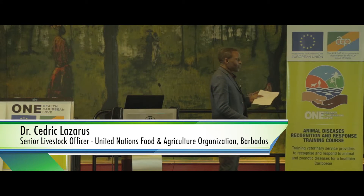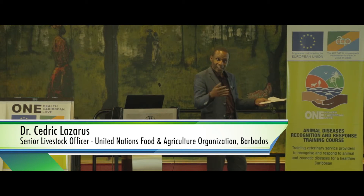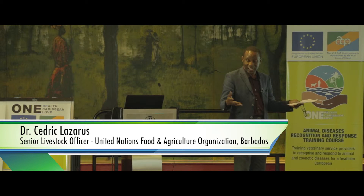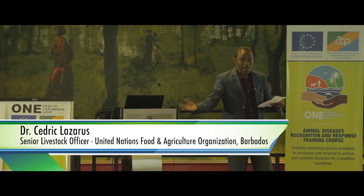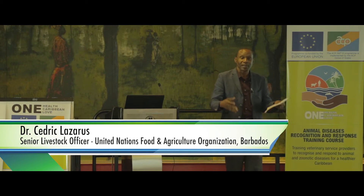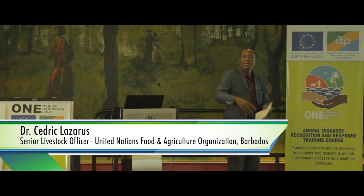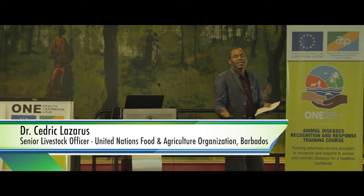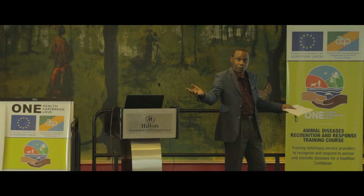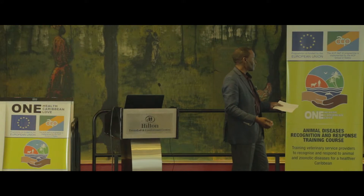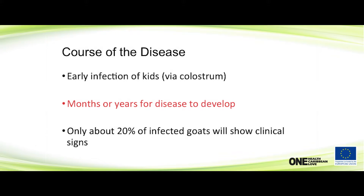Transmission is via colostrum or milk. You can see the link with dairy, because in dairy animals you might be doing pooled colostrum — giving milk stored from one animal to many others. That doesn't usually happen in a meat herd, but it might in a dairy herd. And it takes months or years for the disease to develop, with only 20% or less of animals showing clinical signs.